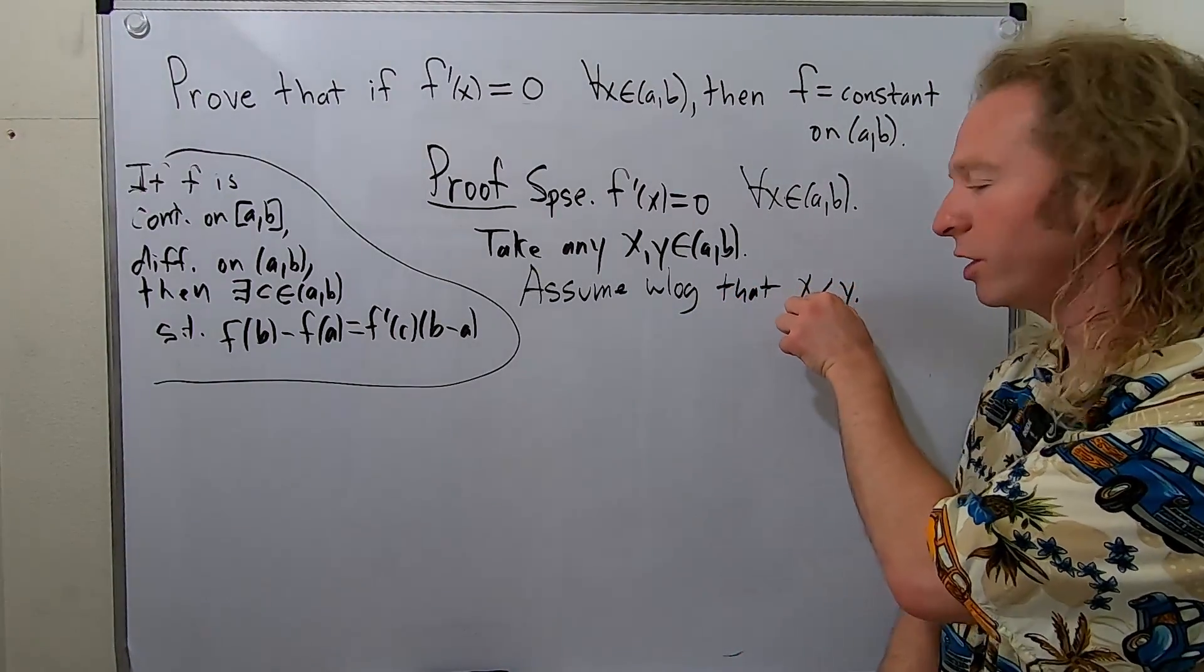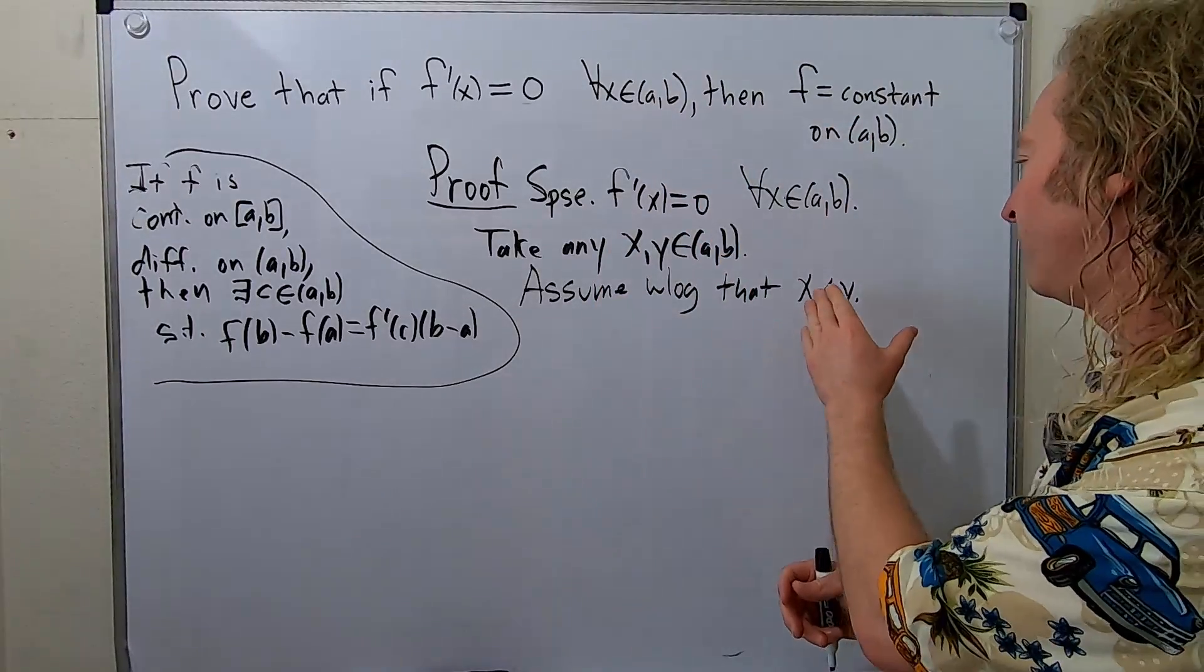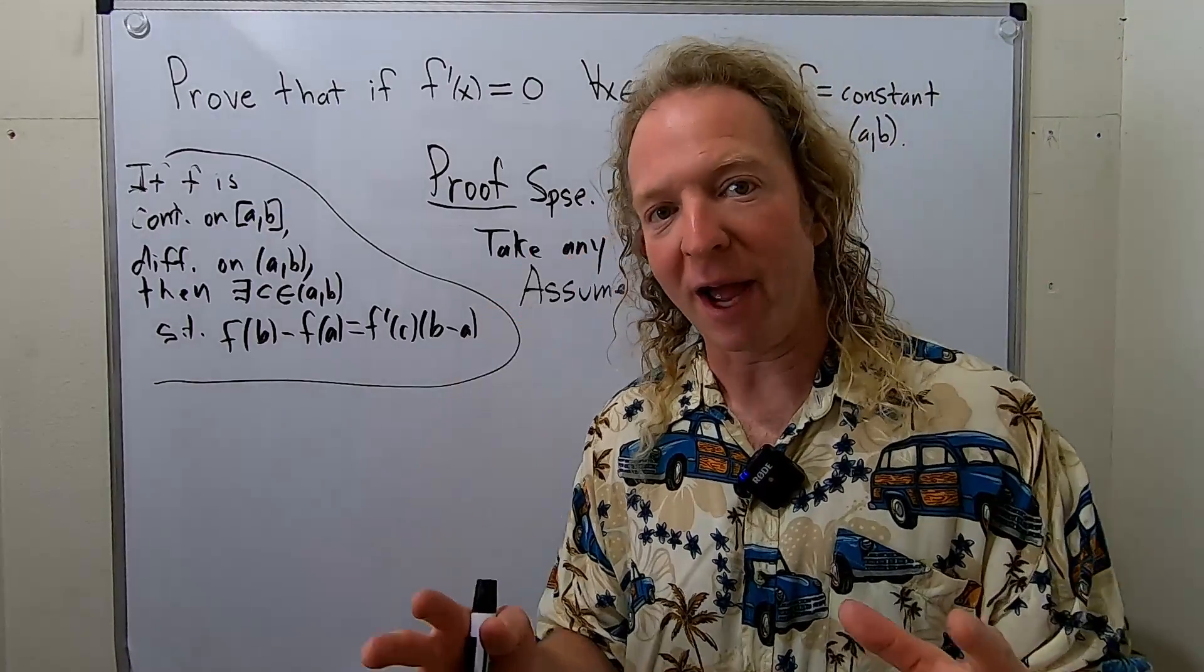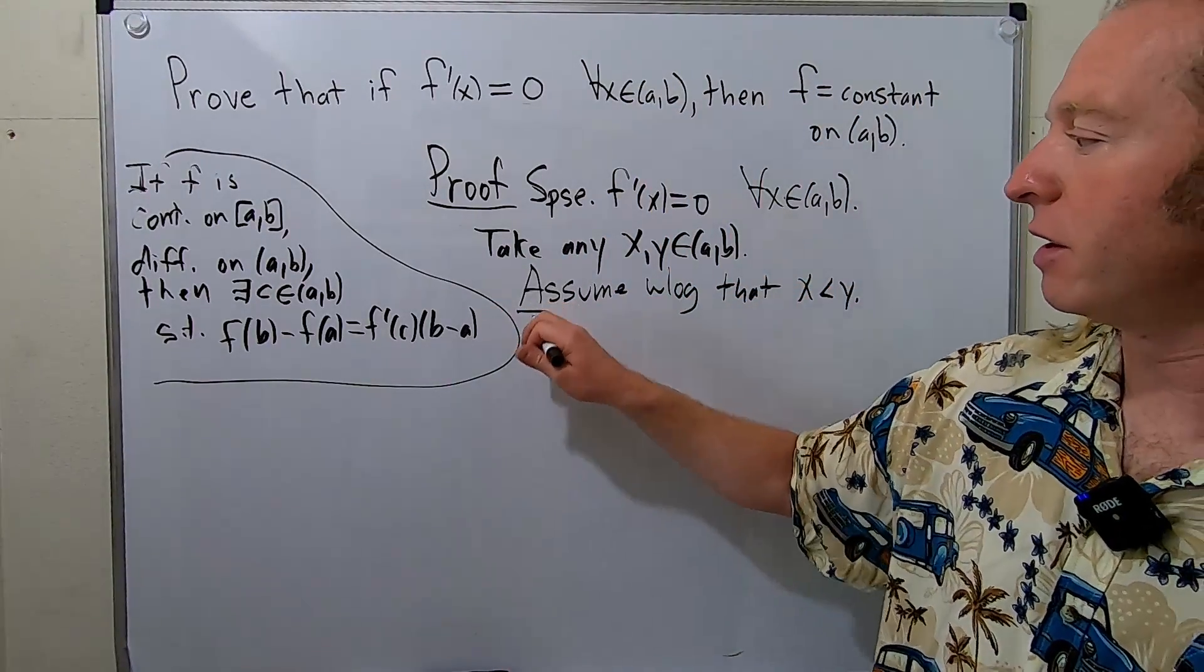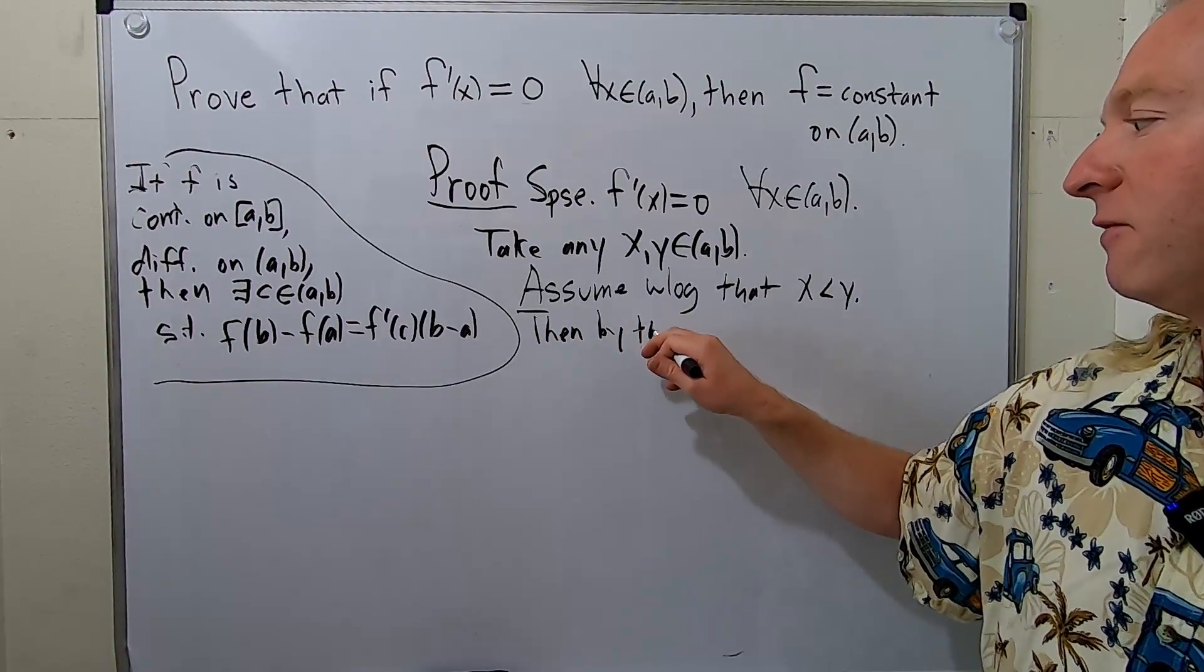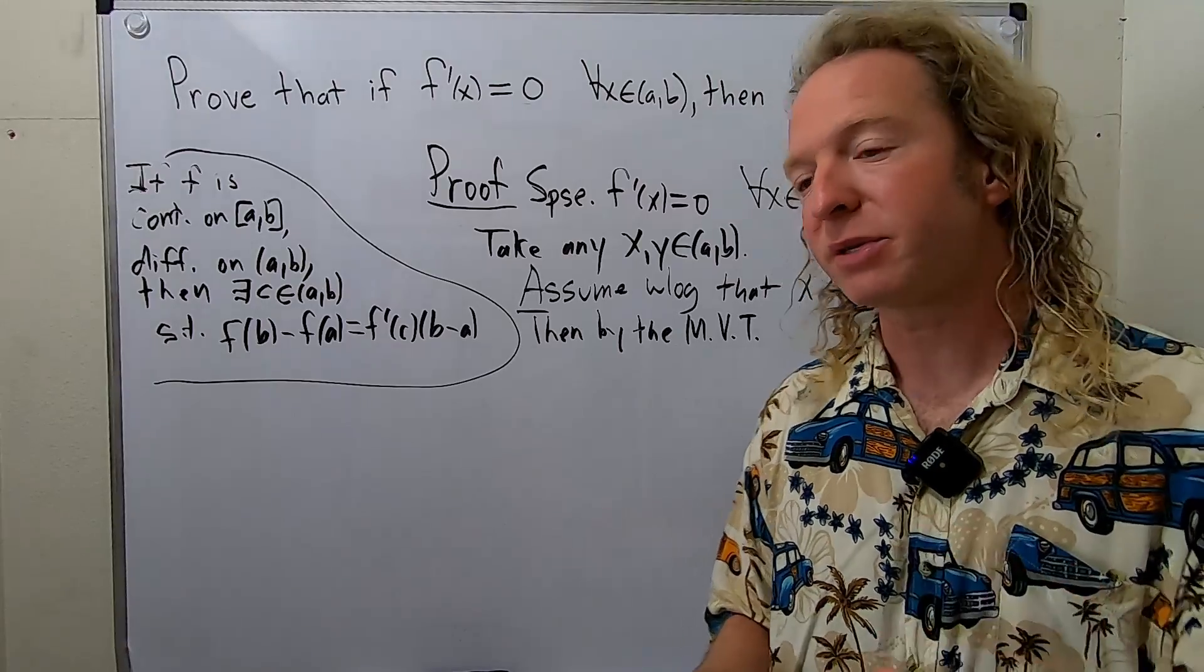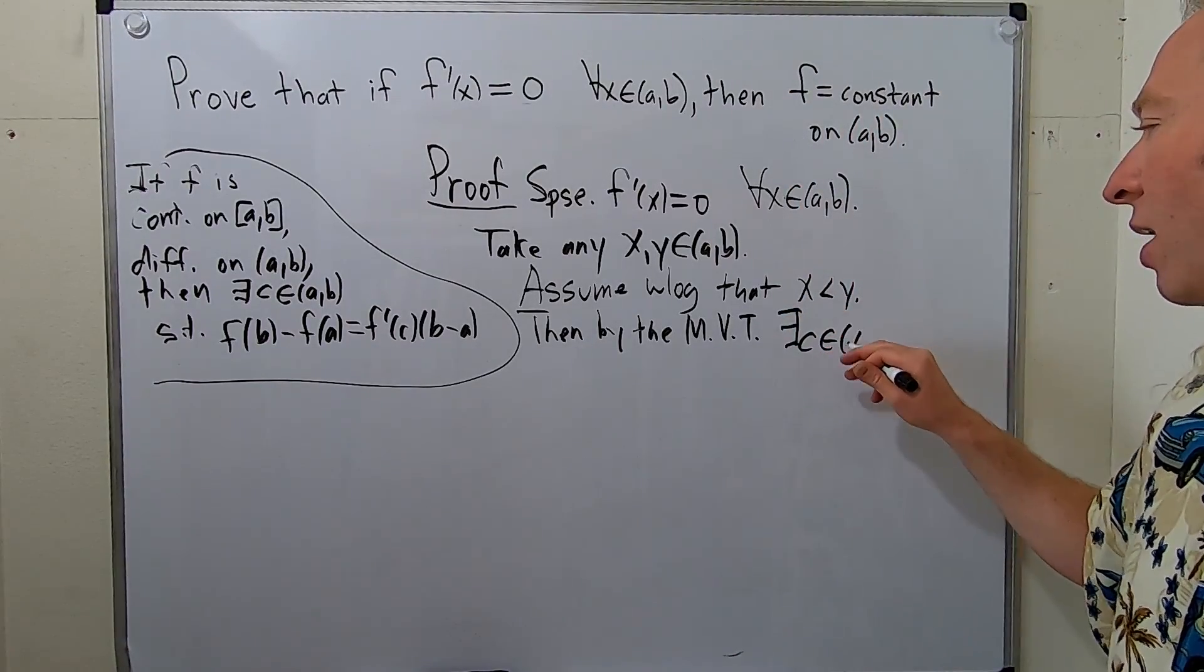And what we're going to do is we're going to use the mean value theorem on (x,y). So if it was the other way around, if y was less than x, we would use it on (y,x). So assume without loss of generality that x is less than y. So then, it's a beautiful proof by the mean value theorem, MVT. We can find some number c. So there exists a value of c in (x,y),